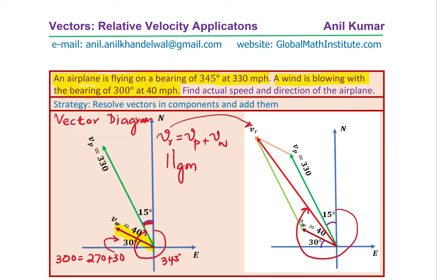We now need to find the magnitude of this and the direction. We'll prefer to give the direction in the form of a bearing angle. So to measure this, we'll find this angle theta. Then our bearing angle from north will be 270 plus theta. So that is how we'll get the result.